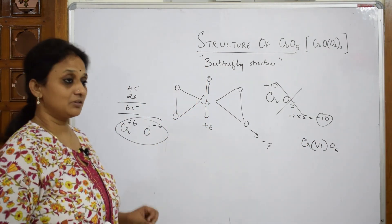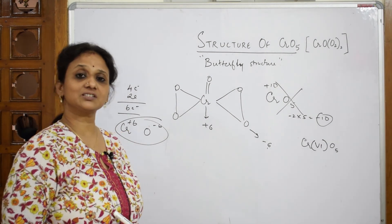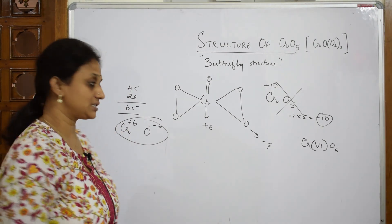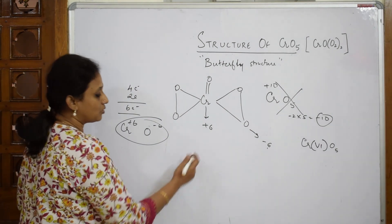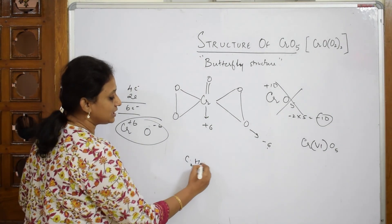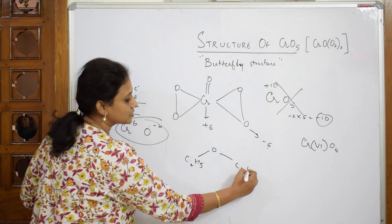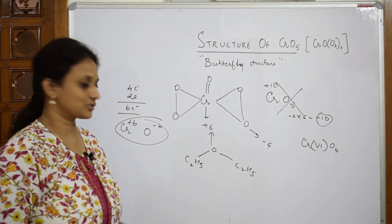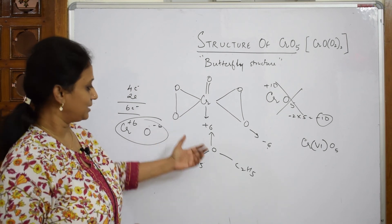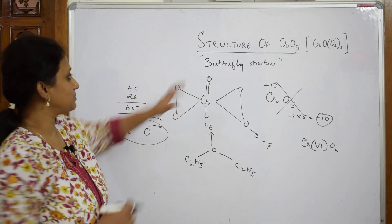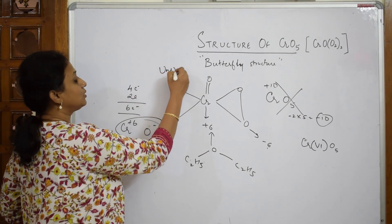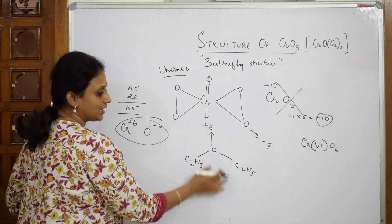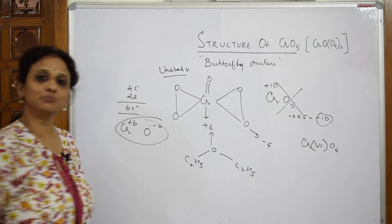This butterfly structure of CrO₅ is unstable, highly unstable. How does it attain stability? This is going to form a bond when it comes in contact with ether molecule - it's going to form a coordinate covalent bond and then becomes a stable structure. This is an unstable compound. To attain stability, it's going to combine in the ethereal solution and that finally forms a bond making it more stable.